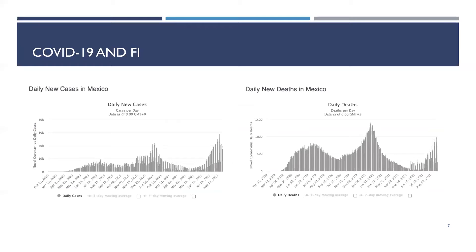Just to give you an idea of the waves Mexico has been through with the pandemic — we are clearly into the third wave. On the left we are seeing the daily cases in Mexico, and on the right the new deaths in Mexico. The scales on the axes are very different, which is why they look somehow different. But you can see that they are pretty reflective of three waves.